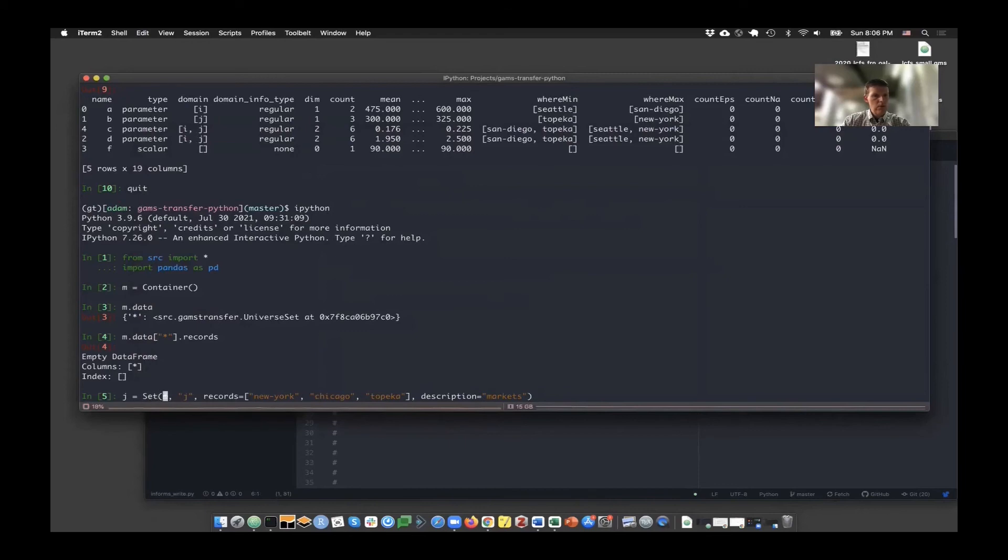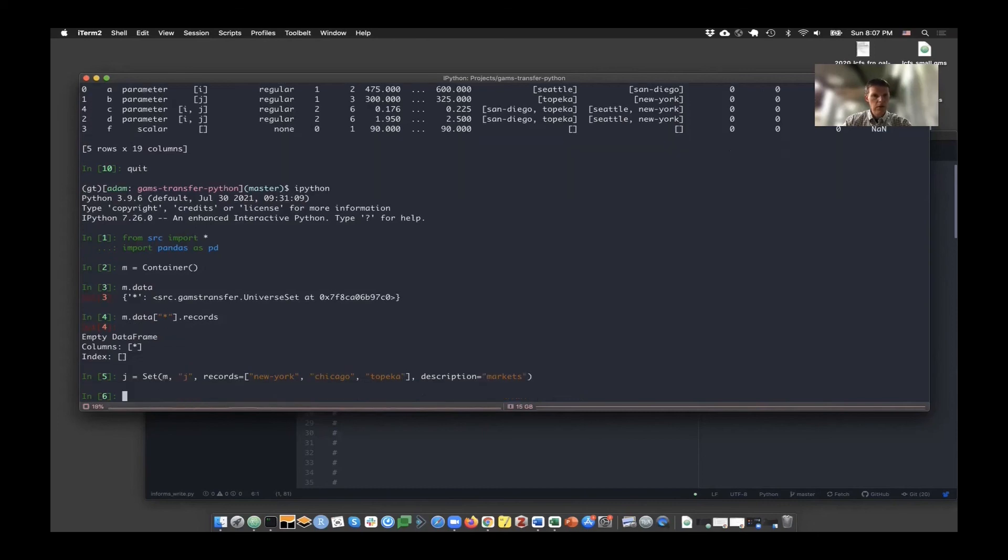The way that I create a set in GAMS transfer is I use this set object constructor here, and I pass it a link or a reference to the container that I'm now working with. The J is the string here, the actual name in the GDX file that'll get created. And then the records of course are convenient Python formats. It can be also some pandas data frames. And then there's also those descriptions that you can attach all the metadata. In this case, I'm creating an object, a symbol object called J.